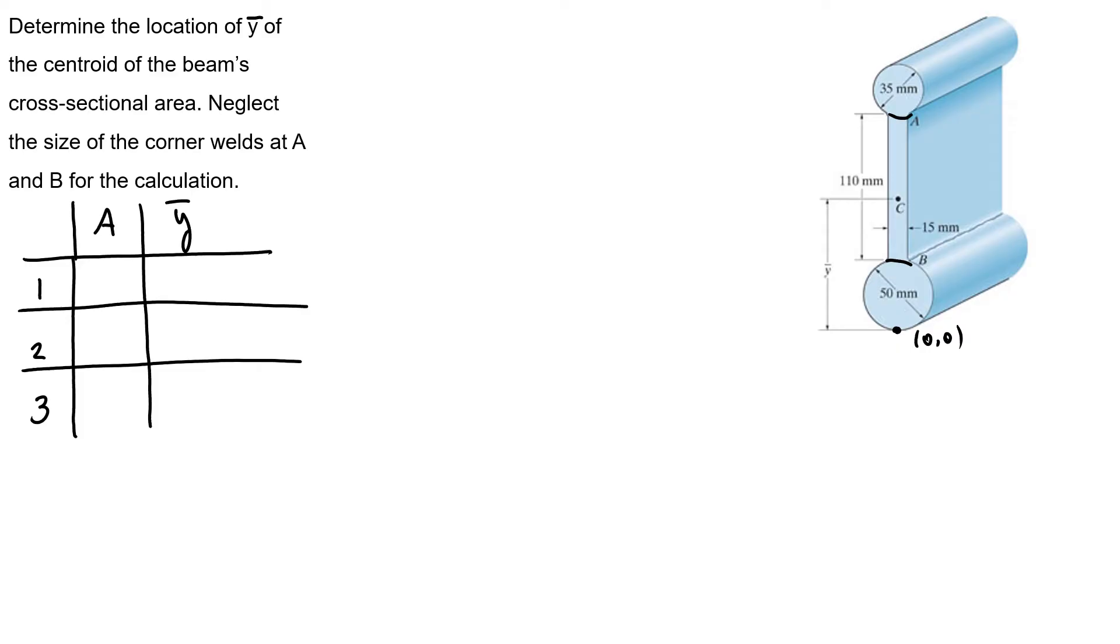Now I know that my areas will be 1, 2, and 3. So my area 1 is π times 50 squared over 4, and my y-bar is half of my diameter, 25 millimeters.